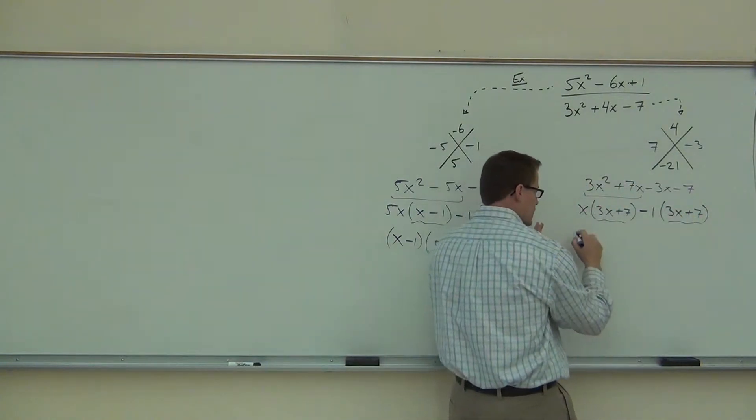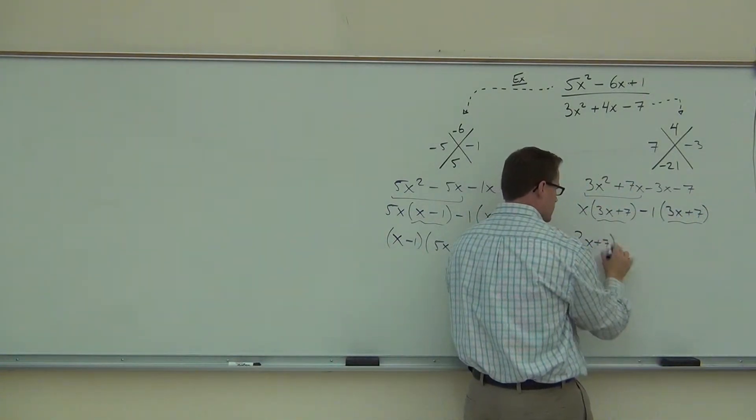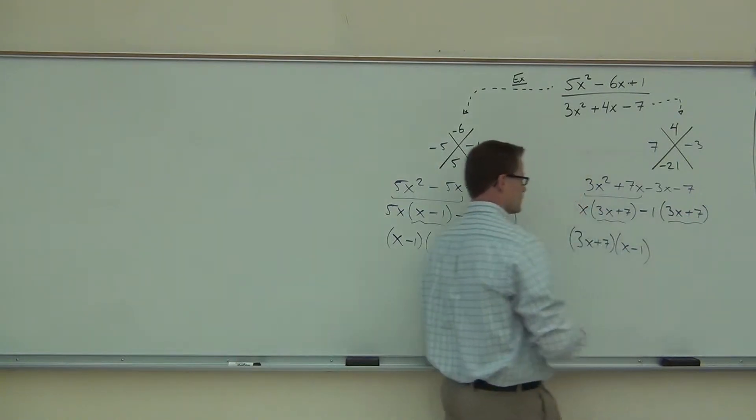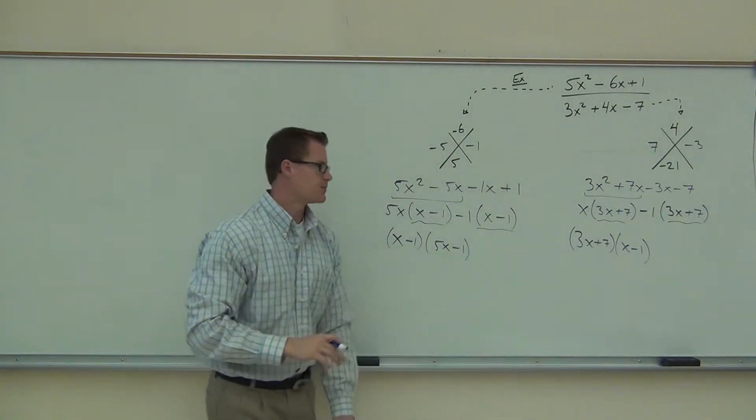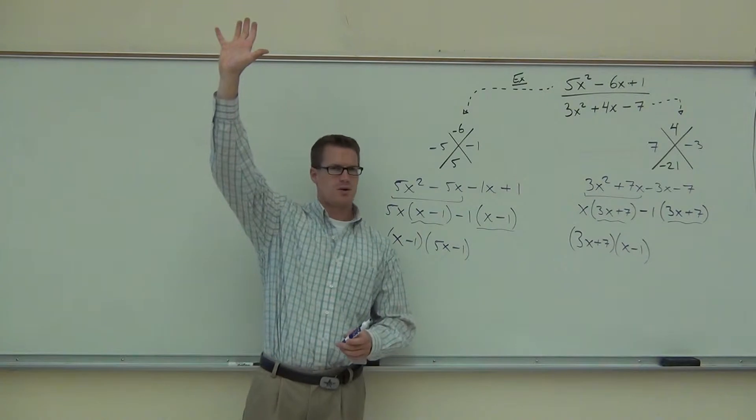When I factor by grouping, I get a 3x plus 7, I get x minus 1, and I'm done. I factored that. How many people made it down on both of those?